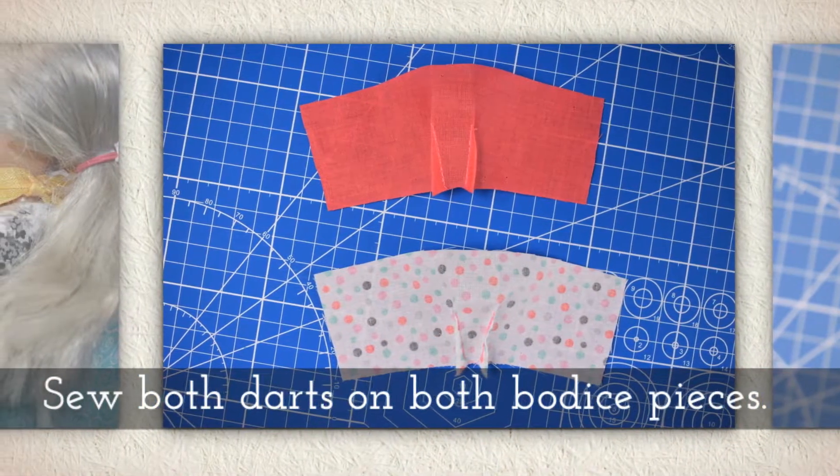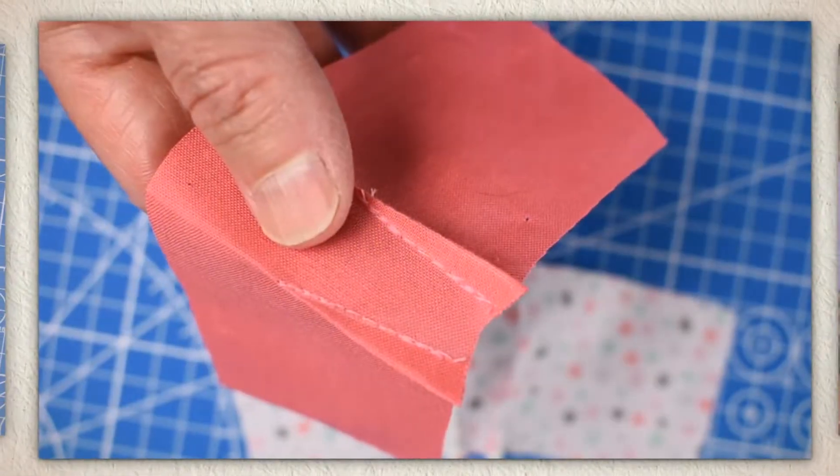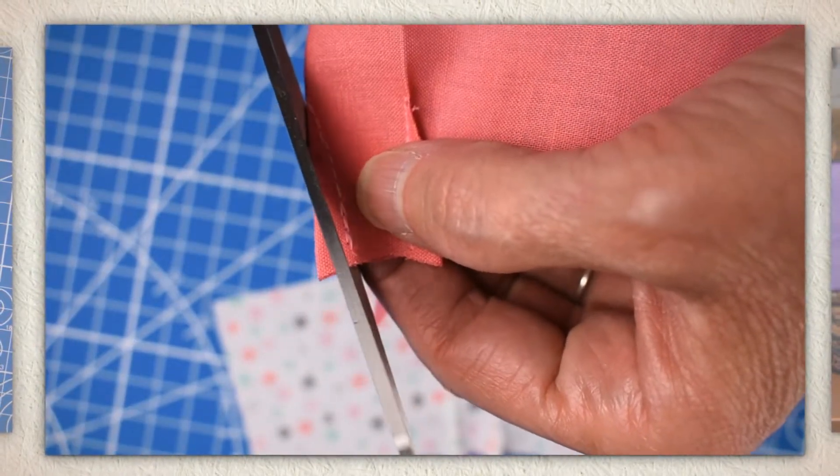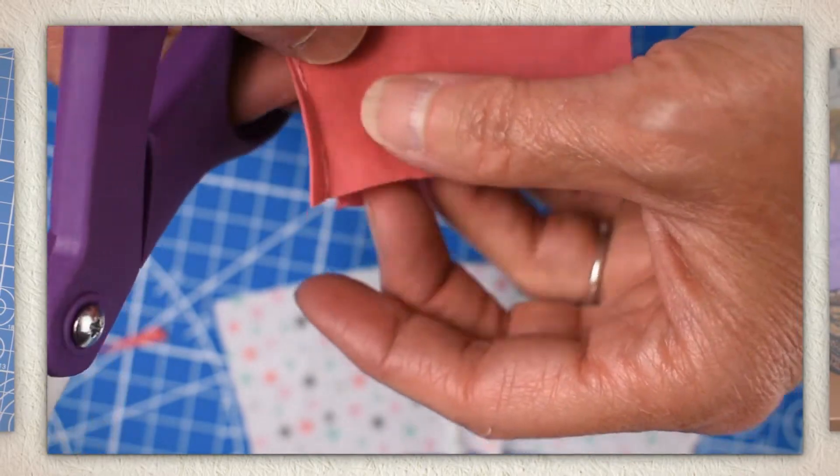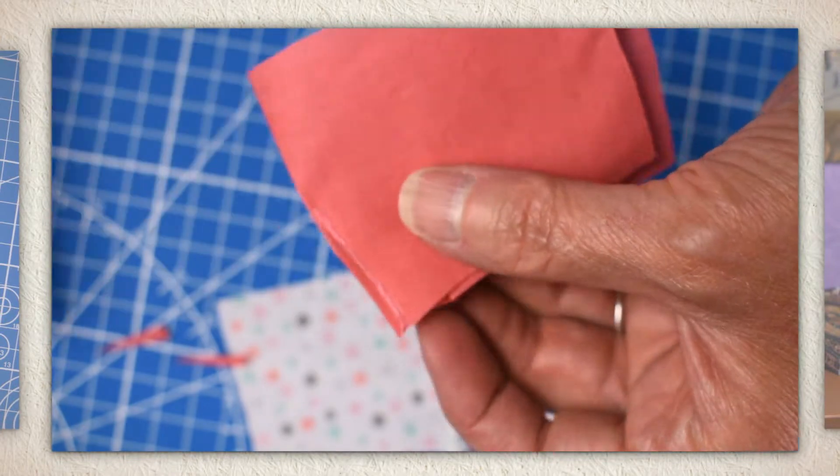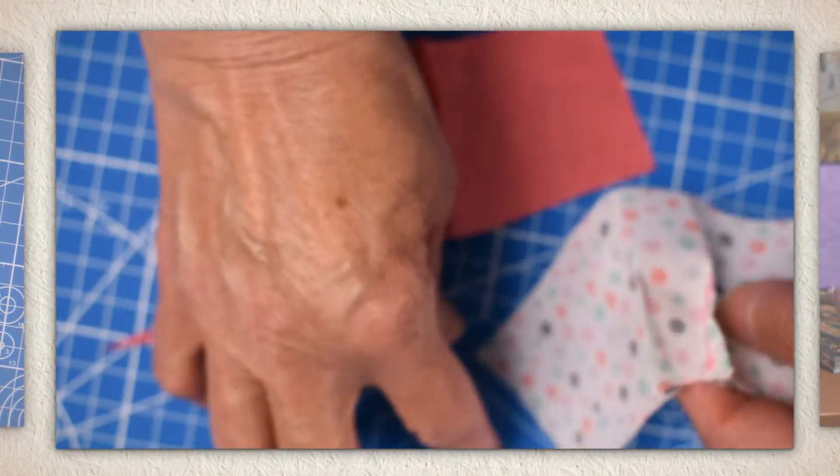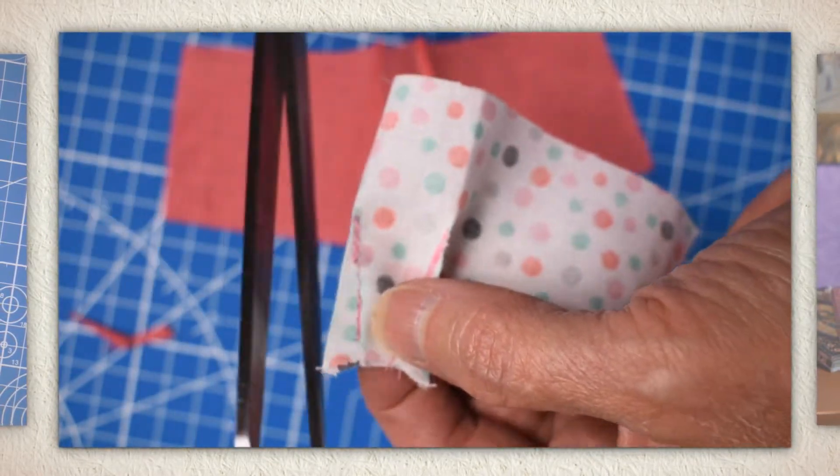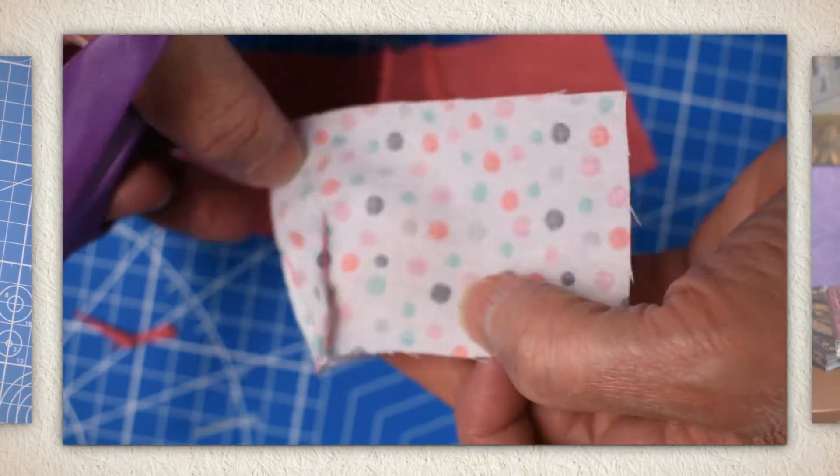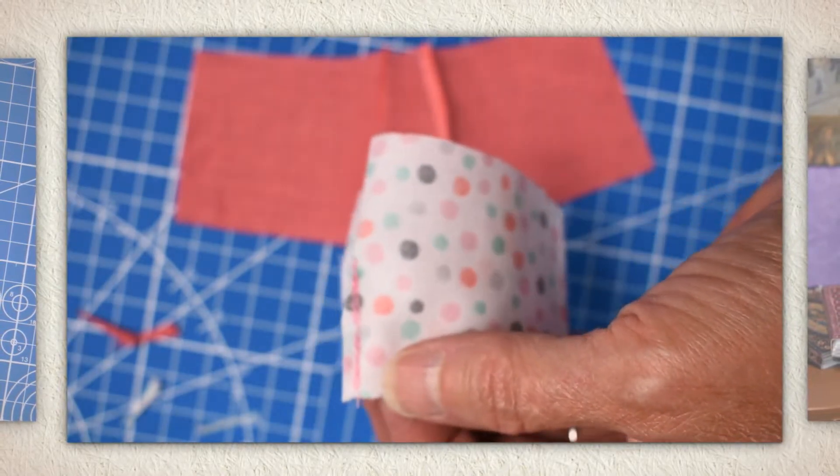Sew both darts on both bodice pieces. Trim away the extra dart fabric and you'll see me doing that right here. So this is my solid color and I'm going to trim away the extra fabric from those darts. This prevents a little bit of bulk in between the layers of the bodice. So it's an important step and now I'm trimming away the extra fabric from the print fabric as well. You'll want to do that for both darts both bodices.